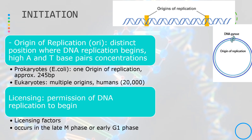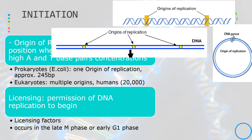One difference between prokaryotes and eukaryotes is the number of origins of replication. Eukaryotes have multiple origin of replication sites because of their longer DNA sequences. In humans, there is an estimated 20,000 origins of replication in the DNA.